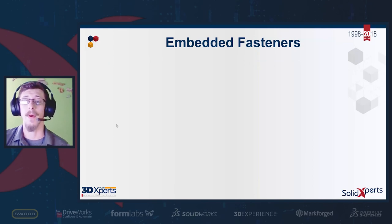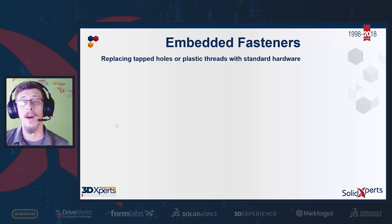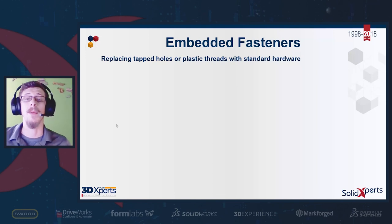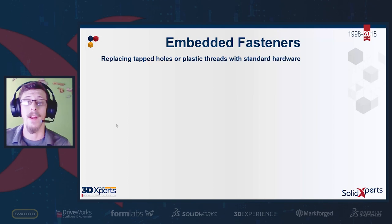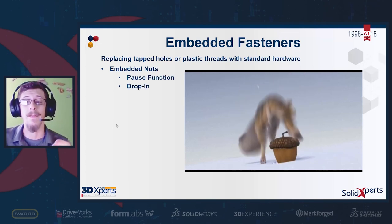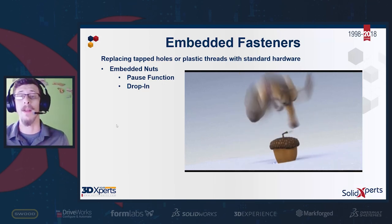Another challenge for additive manufacturing is incorporating printed parts into an assembly using fasteners. It's quite common to tap the plastic or use plastic threads, but that's not a long-term solution because the plastic generally wears out with frequent use. It's better to use store-bought standard hardware — specifically embedded nuts — and use threads specifically designed for fasteners.